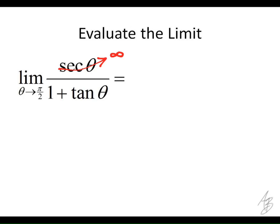On the bottom, since we have sine over cosine for tangent, we're going to have 1 over 0, and that's going to go to infinity. So we have the indeterminate form infinity over infinity. And since that's equivalent to 0 over 0, L'Hôpital's rule works.